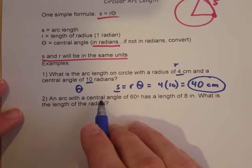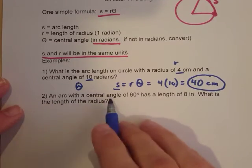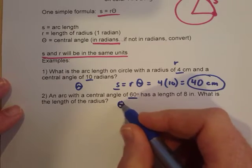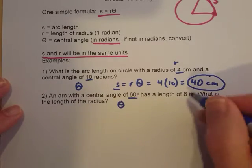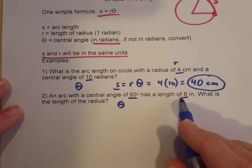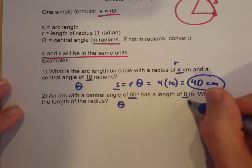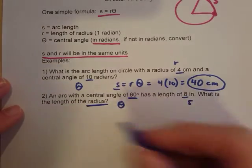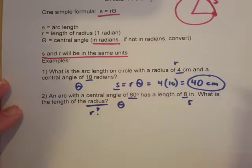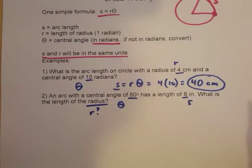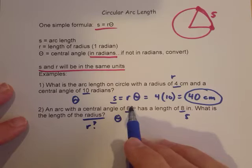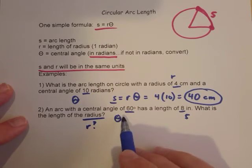Next up, number two. An arc with a central angle of 60. So that's going to be theta. Has a length of 8 inches. So the arc length is 8 inches. That's going to be S. What is the length of the radius? That's our question here. What is R? Now, with this formula, as I've mentioned a couple times already, the angle needs to be in radians.